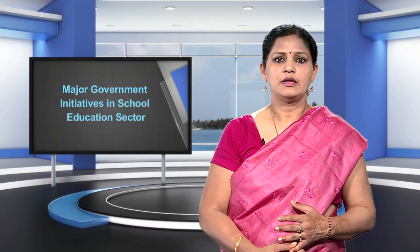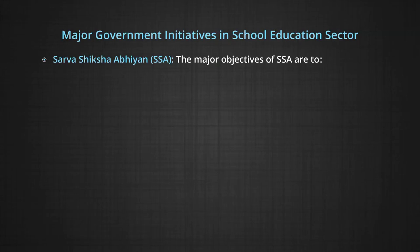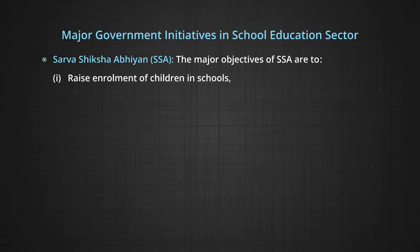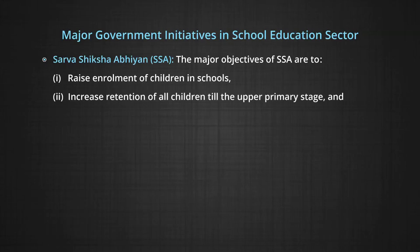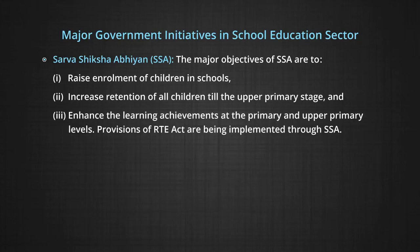Let us see the major government initiatives in the school education sector. First, Sarva Shiksha Abhiyan (SSA) is a major flagship program for universalization of elementary education launched in 2001, implemented in partnership with states. The major objectives of SSA are: to raise enrollment of children in schools; increase retention of children till upper primary stage; and enhance learning achievements at primary and upper primary levels. Provisions of the RTE Act are being implemented through SSA.